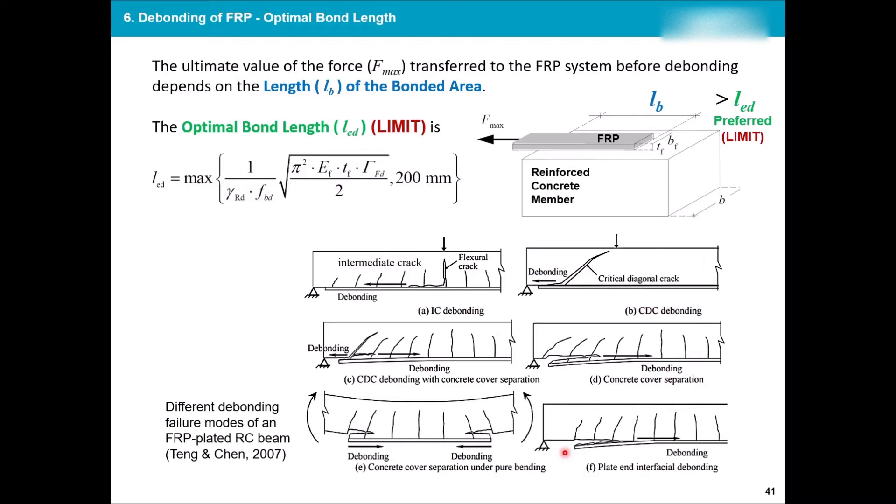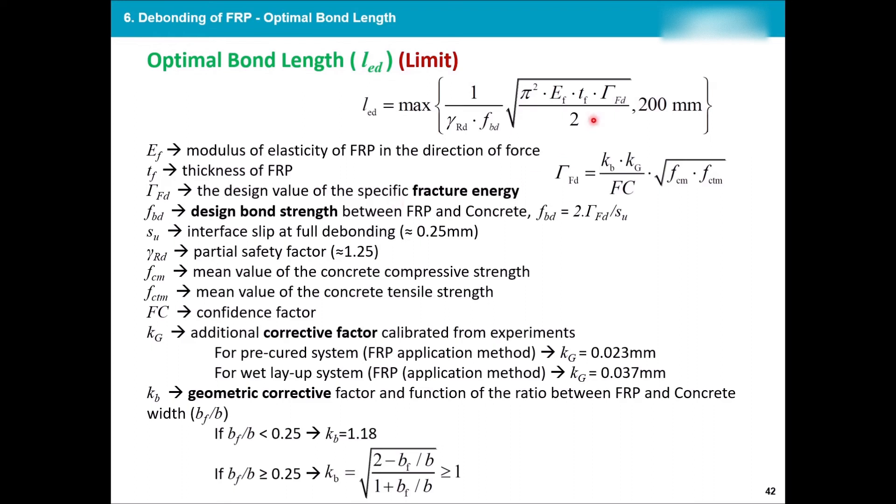So one of the suggestions is that there is an optimal bond length. So this is the limit. If you calculate this for any FRP that you have, your length of connection should be always bigger than that. If your length of bonded area is less than the preferred or the limit, then you will have a debonding issue and one of these can happen. The formula is very simple. It's a maximum of either 20 centimeters or this formula.